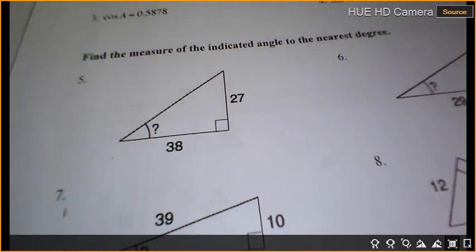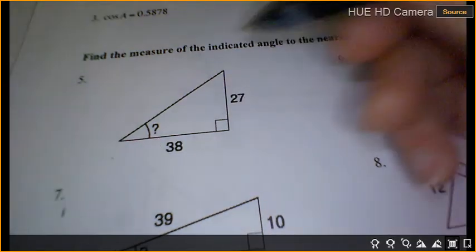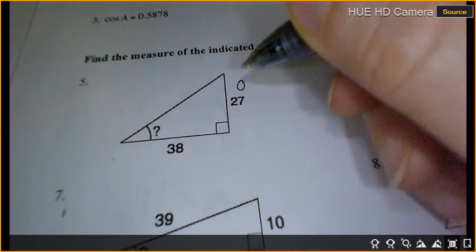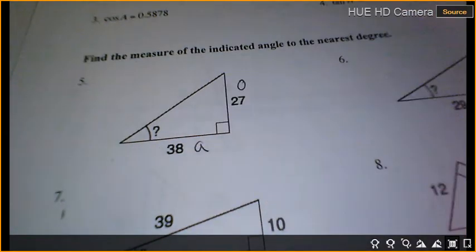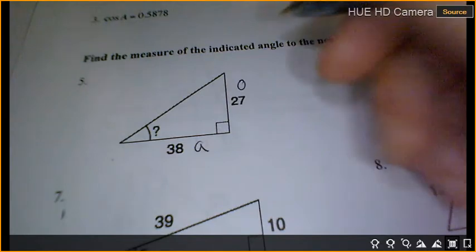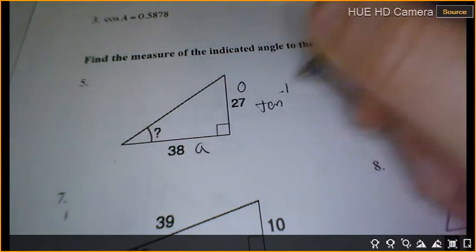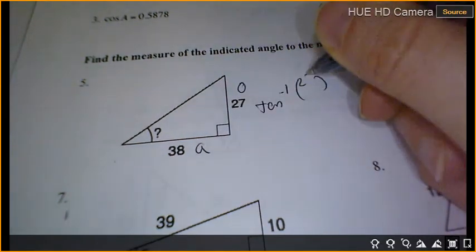Number 5. I'm looking for that angle right there. What is 27? Yep, and what's 38? So which trig function am I going to use? Tan. And I'm looking for an angle, so it's tan of negative 1. Tan, opposite 27, over adjacent 38.